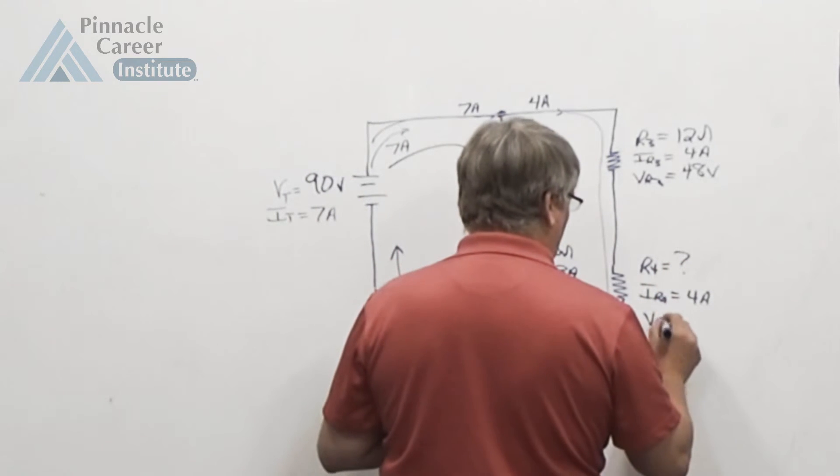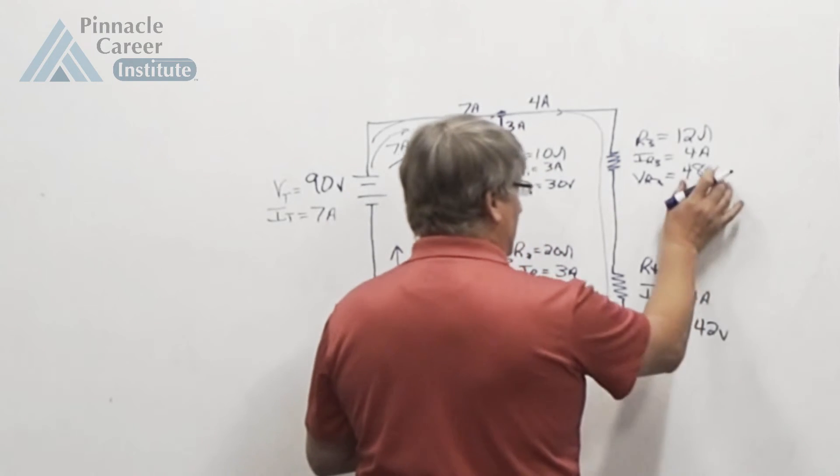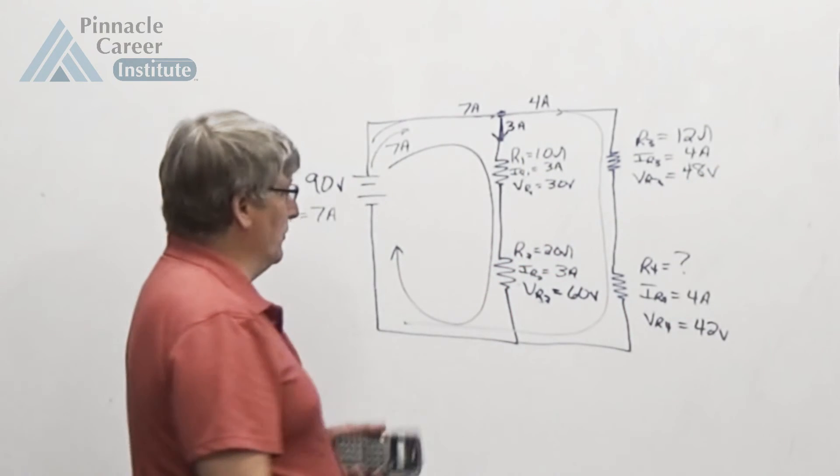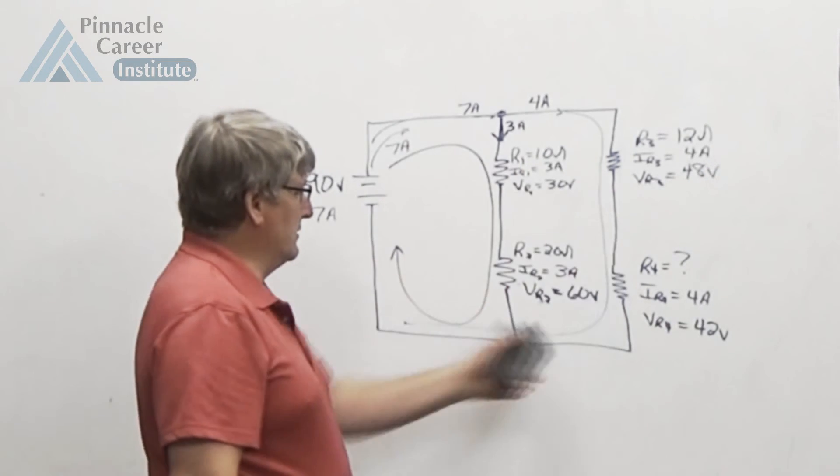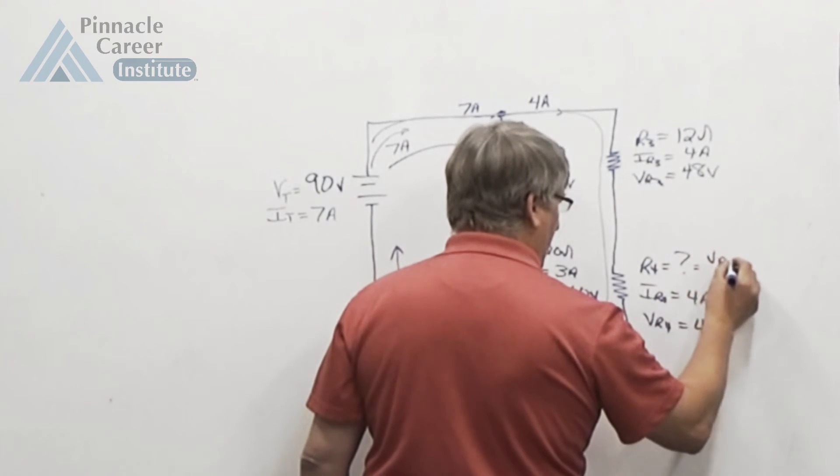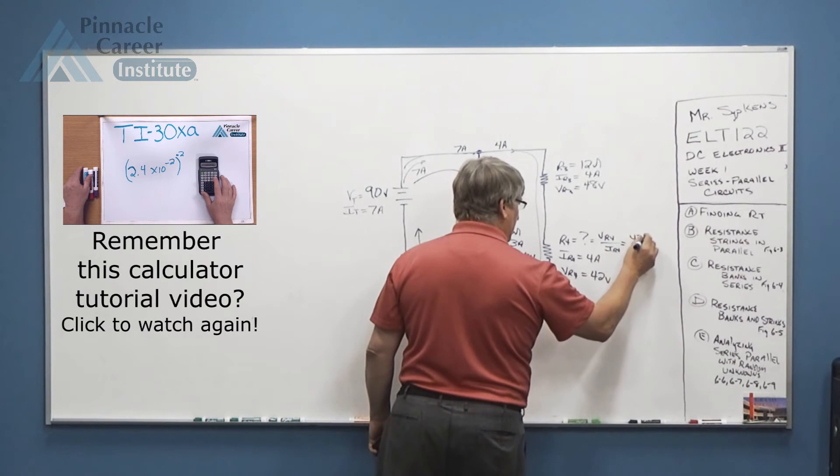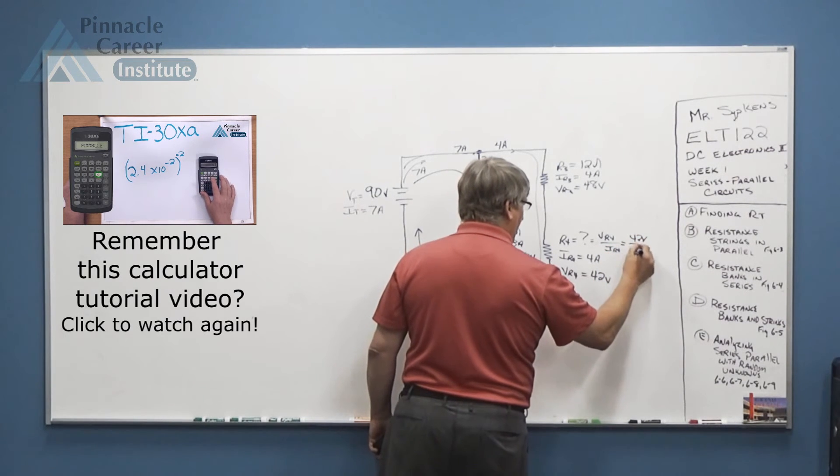I know my VR4 equals 42 volts. 42 volts plus 48 volts is 90 volts. So this loop now makes sense. And I can solve for R4, because R4 is going to equal VR4 divided by IR4, which is 42 volts divided by 4 amps.